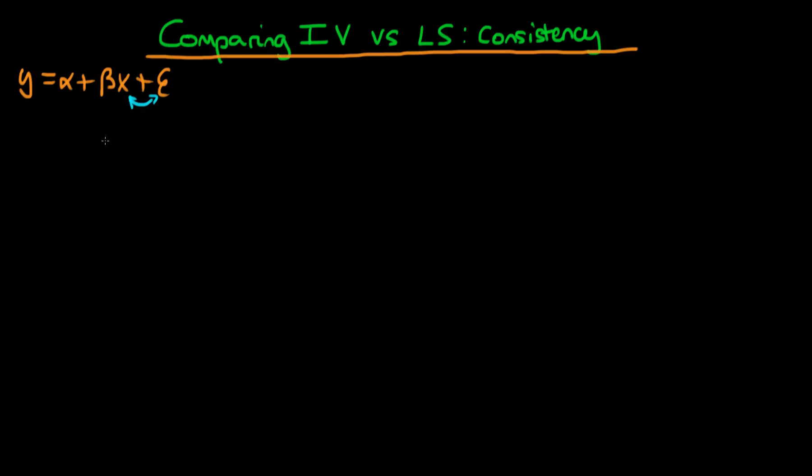So we can write the probability limit of beta hat least squares. So we write that plim beta hat least squares is equal to the covariance of x with y divided through by the variance of x, which I'm just going to write sigma x squared.